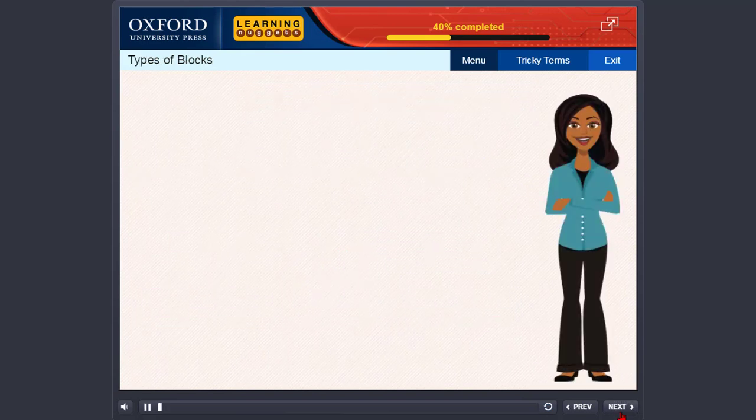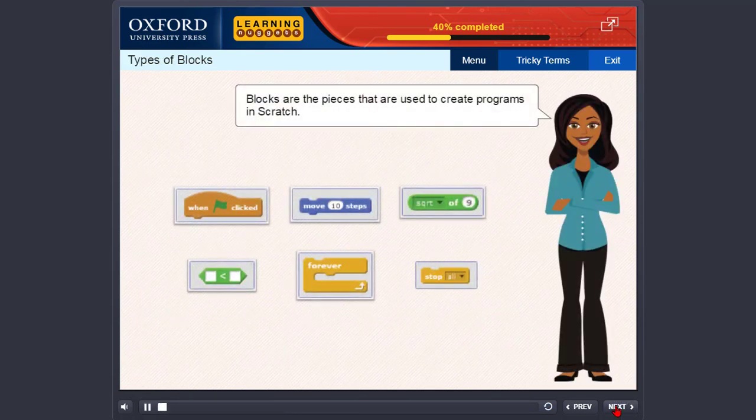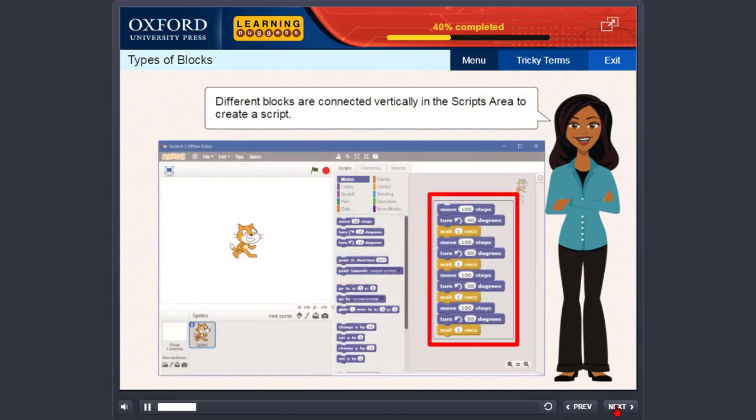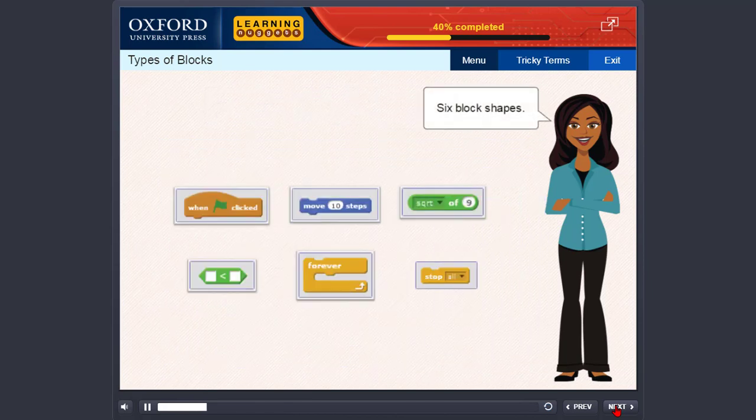Types of blocks. Blocks are the pieces that are used to create programs in Scratch. Each block is of a specific shape. Different blocks are connected vertically in the scripts area to create a script. There are six block shapes. Let us discuss each block shape in detail.